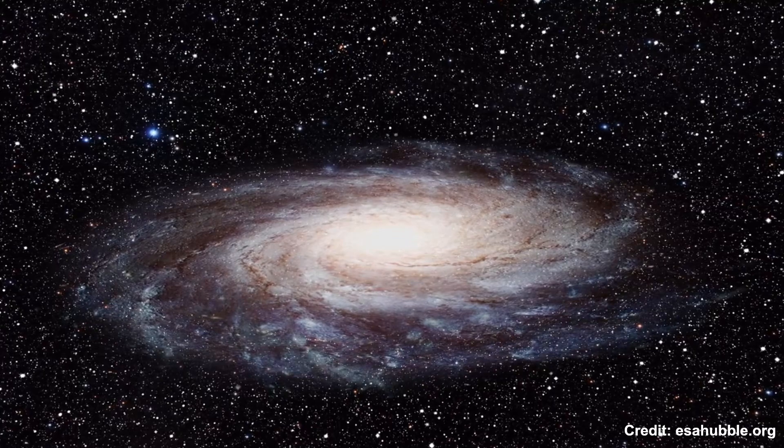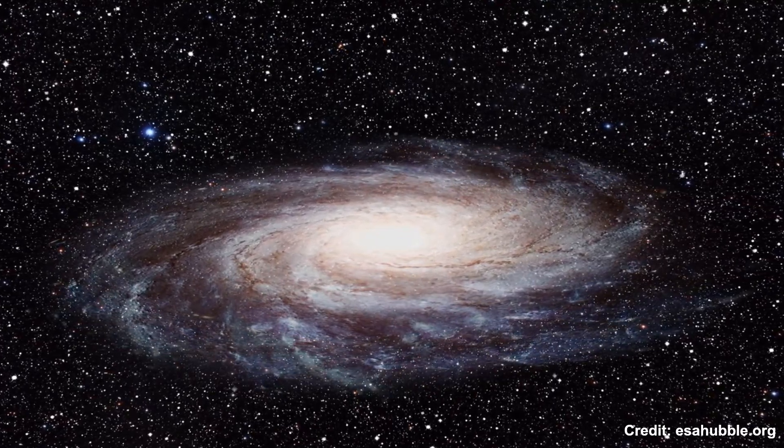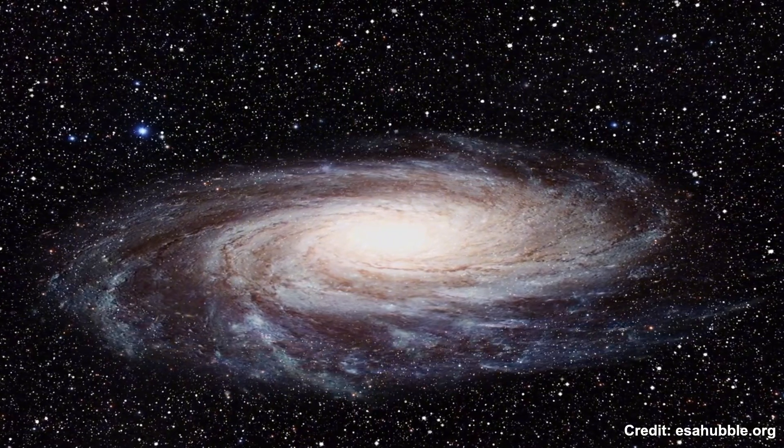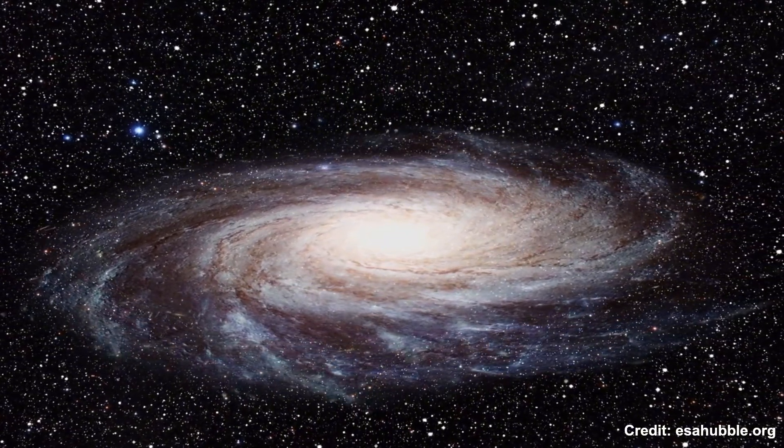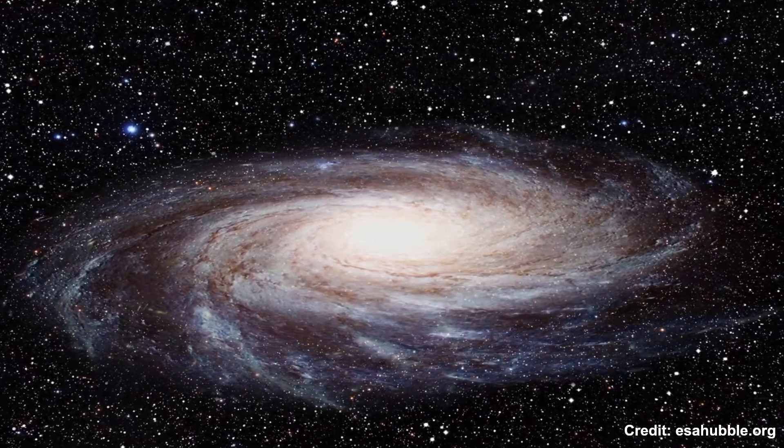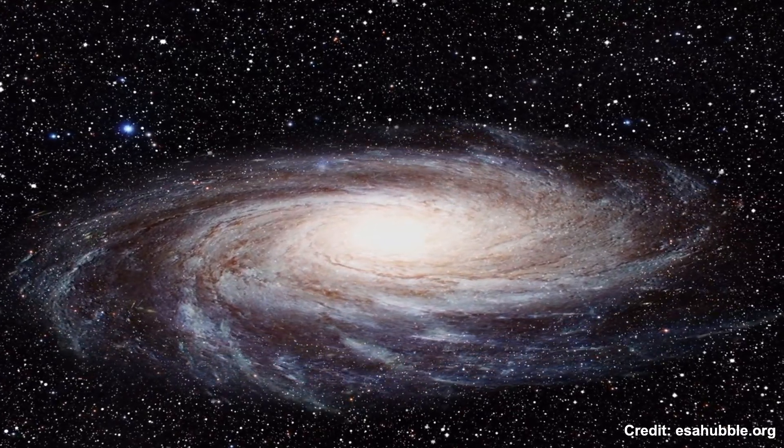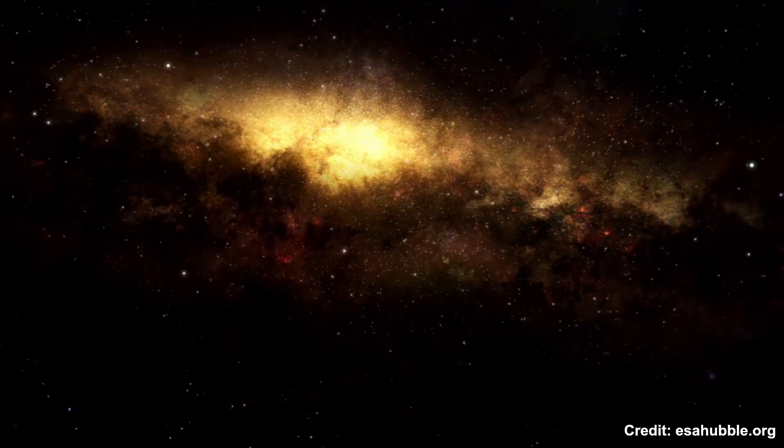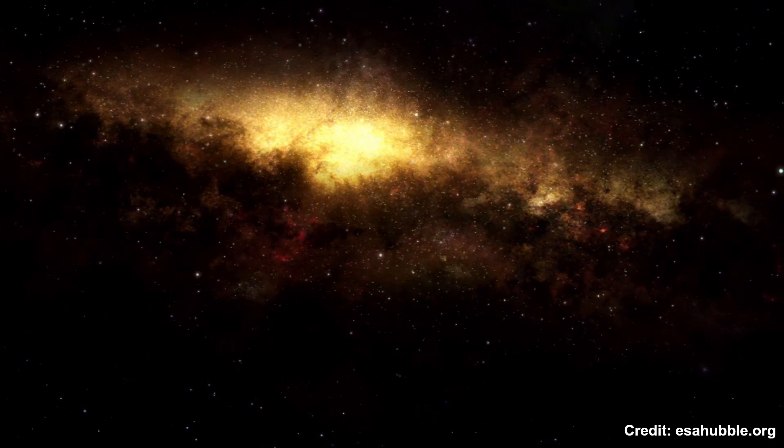Each shaped by the forces of gravity and the events of their formation. Our own Milky Way is a barred spiral galaxy, home to over 100 billion stars. But the Milky Way is just one of an estimated 2 trillion galaxies in the observable universe. To grasp how we arrived at this figure, we need to understand the history of galaxy discovery and the tools that made it possible.